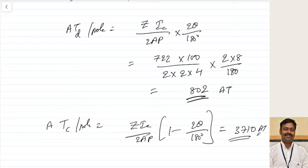To summarize: if brushes are not shifted, the effect of armature reaction is only cross-magnetizing unless there is saturation on the trailing pole tip. But when you shift brushes toward the magnetic neutral axis, the armature flux direction changes, leading to both demagnetizing and cross-magnetizing effects. To avoid demagnetizing, provide extra turns on the main field winding. To compensate for cross-magnetizing, use compensating winding on the main pole shoes — though it is costly and used only where fluctuations are significant. I hope this is clear; please post queries in the comment section.